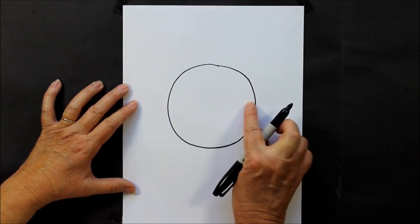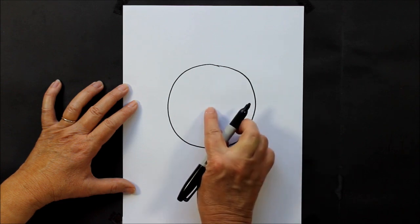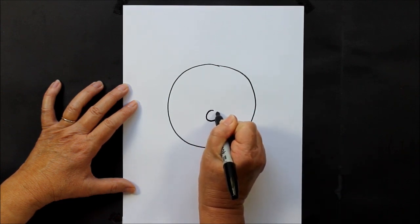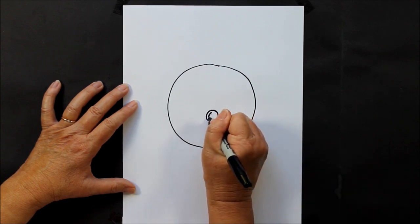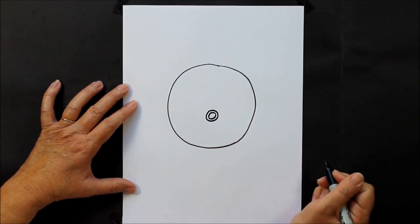Then what we're going to do is find the middle of your circle and go down just a touch, and you're going to make a smaller circle inside. Inside that smaller circle, you're going to make an even smaller circle.